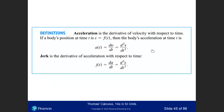Acceleration is the derivative of velocity with respect to time. If the body's position at time t is s = f(t), then the first derivative is velocity v, and the second derivative is acceleration. The third derivative is called jerk. Acceleration tells you how much the speed is changing and in what direction — positive or negative.